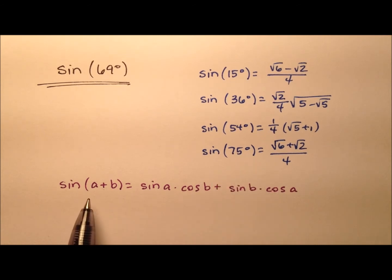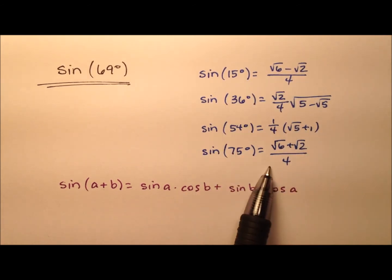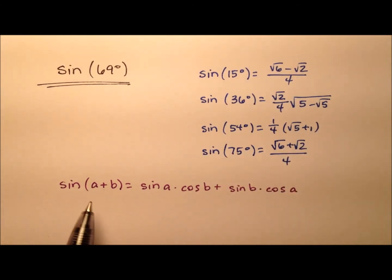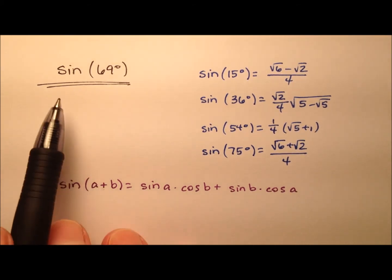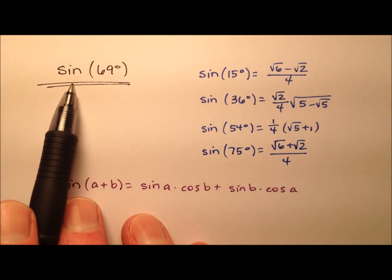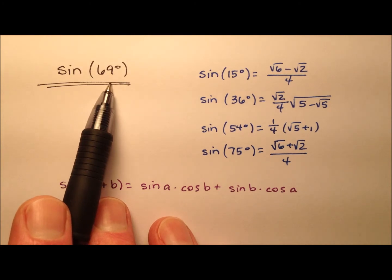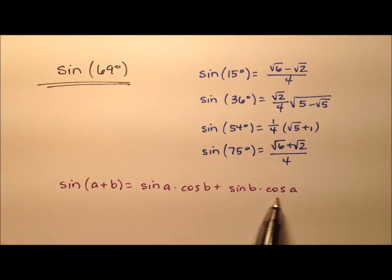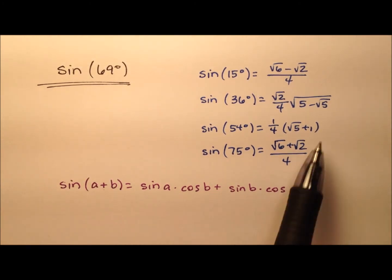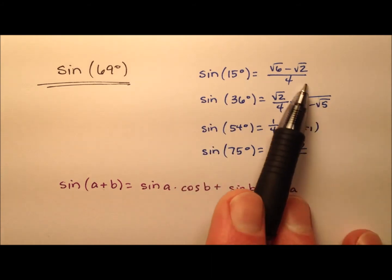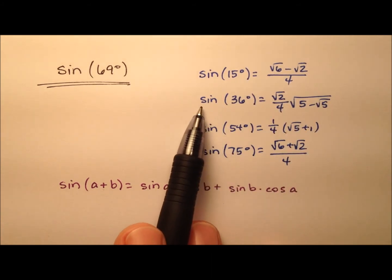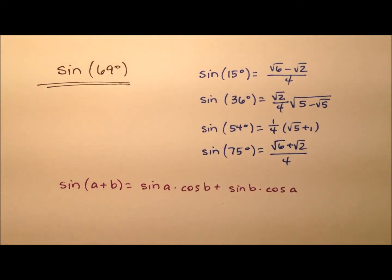As we work through here, we're going to need these four values. Probably this video in and of itself won't be as interesting — while it will give you the exact value for the sine of 69 degrees, the process we use won't be as interesting as the processes used to find these values, particularly the sine of 36 and the sine of 54 degrees.